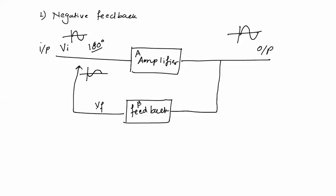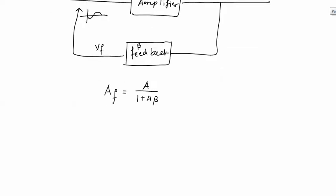In negative feedback, if the gain of the amplifier is A and the gain of the feedback network is beta (also called the feedback factor), then the overall gain of the amplifier with feedback is defined as Af = A / (1 + A·beta).